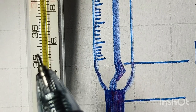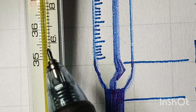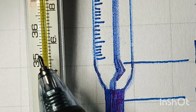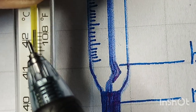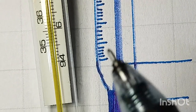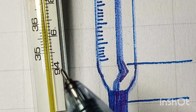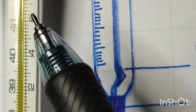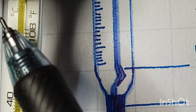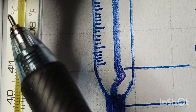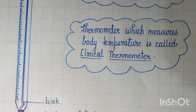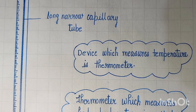You can see the scale calibrated on the thermometer. The clinical thermometer has a minimum temperature of 35 degrees Celsius and a maximum of 42 degrees Celsius. In Fahrenheit, the minimum is 94 degrees Fahrenheit and the maximum is 108 degrees Fahrenheit. So the units used by the clinical thermometer are degree Celsius and degree Fahrenheit.